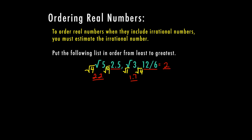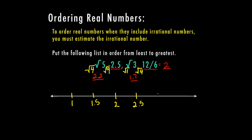The easiest thing to do when you are going to put this list in order is to go ahead and place them on a number line. Our smallest number is 1.7, so I'm going to go ahead and label my number line starting with one, then one and a half, two, two and a half, and three. I don't have any numbers larger than three, so I can go ahead and just stop there. So let's place these in the correct order. 1.7 is my smallest number — it's going to be a little bit larger than 1.5 — and 1.7 does represent the square root of three, so I'm going to write that in original form.